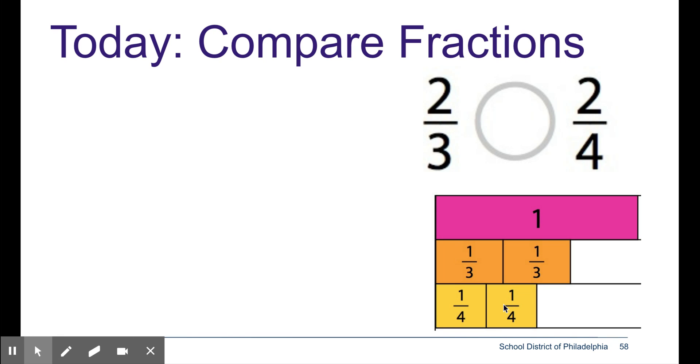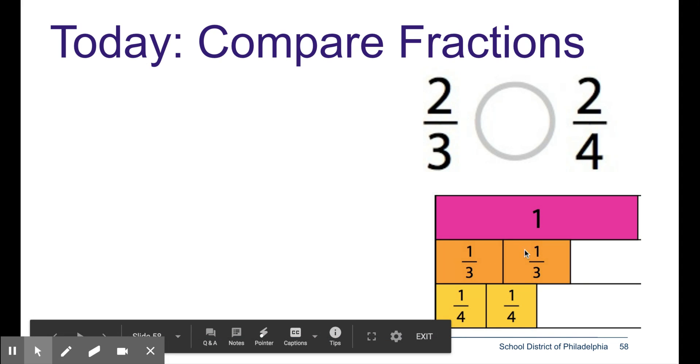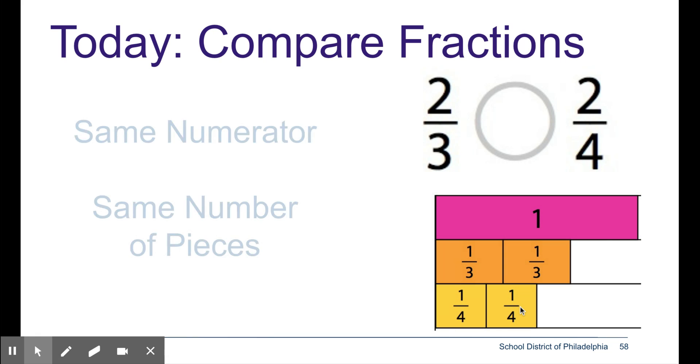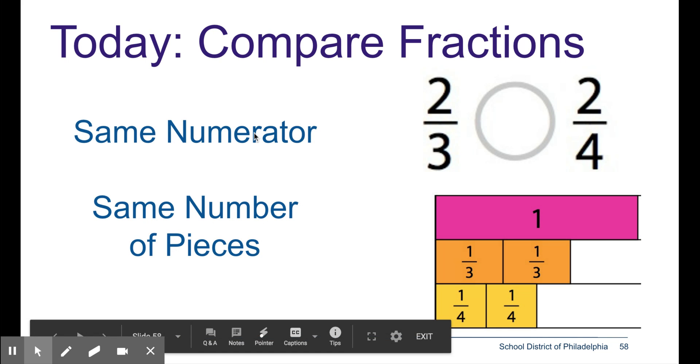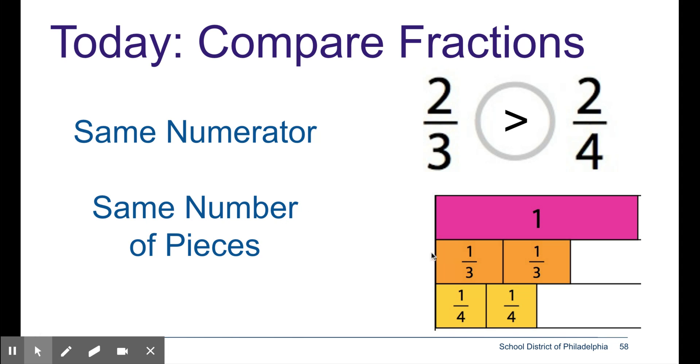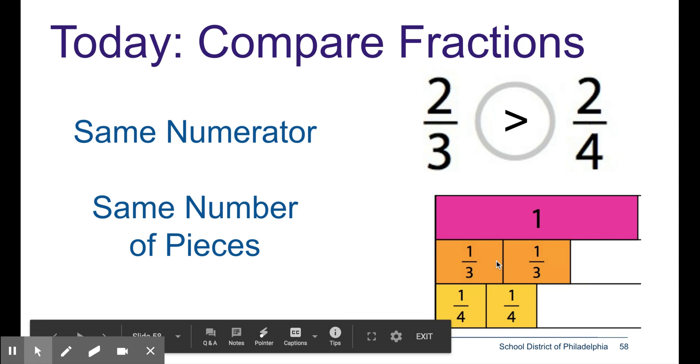I notice that 2 third pieces are larger than 2 one fourth size pieces. When I have the same numerator I have the same number of pieces and I can compare them easily. 2 one third size pieces is greater.